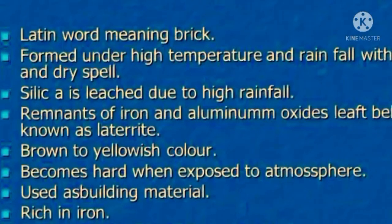The pH value of laterite soil is less than 6, so it is acidic soil. Normally there is a lot of acidity in the soil, and plant growth is not sufficient. When we use the soil for cultivation, we mix in calcium carbonate to increase alkalinity and neutralize the acidity.